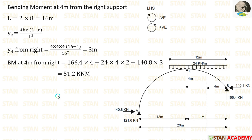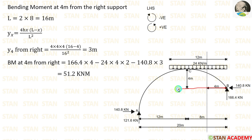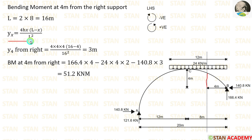In this question, we have been asked to find the bending moment at 4 meter from the right support. We may face some confusion because we are having two rises and two lengths, so we have to see where the 4 meter point lies. For the right side, the rise of the arch is 4 meter and the length is 8 meter, giving a total span of 16 meter for the parabola formula. To calculate the height at 4 meter, we use: Yx = 4hx(L − x) / L². With L = 16m, h = 4m, x = 4m, we get y = 3 meter.